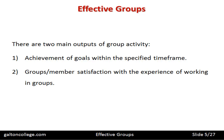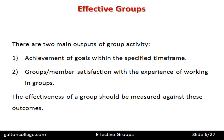So we have two ways of looking at effectiveness in groups. In fact, we have two conditions to be met if we are going to gauge a group to be effective. The effectiveness of a group should be measured against these outcomes — those are our overarching requirements to measure effective group interactions and achievements.